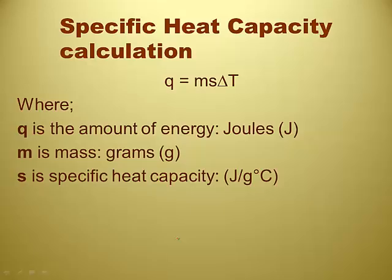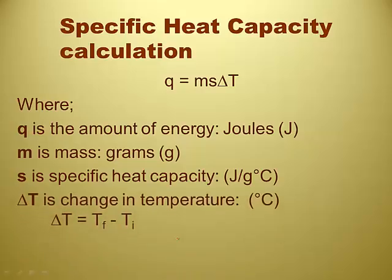So s is kind of a constant depending on the substance, right? Right. You should be able to calculate it if you want, if you know q, m, and delta t. But you should also be able to look it up so you can tell how much energy it's going to take to change something's temperature. And delta t is exactly what we think it would be. We know delta means changing. So it's the change in temperature.